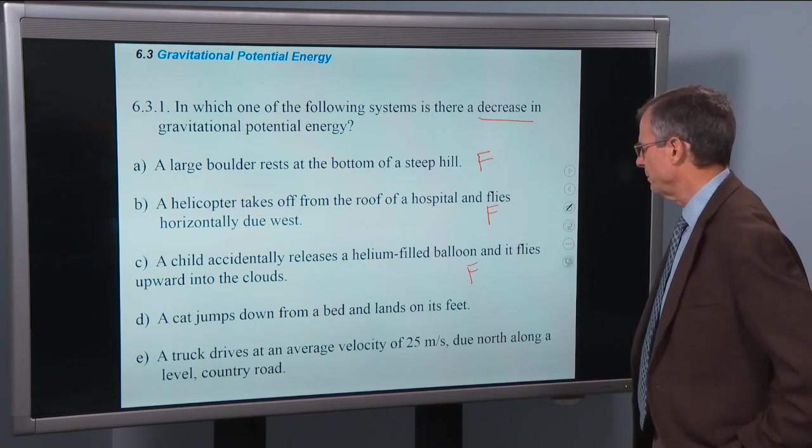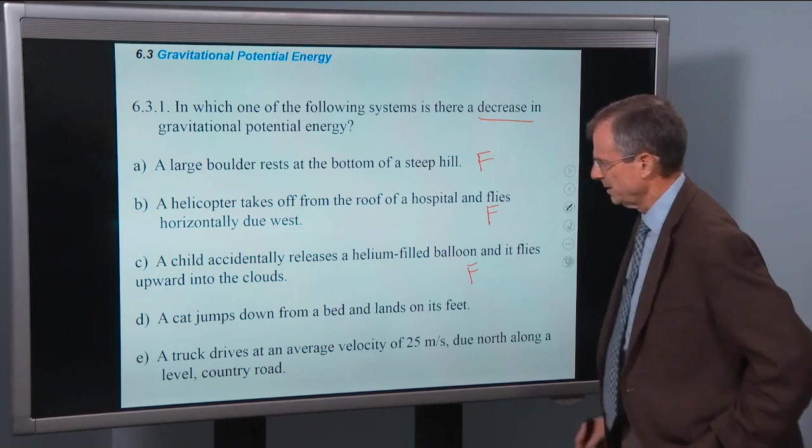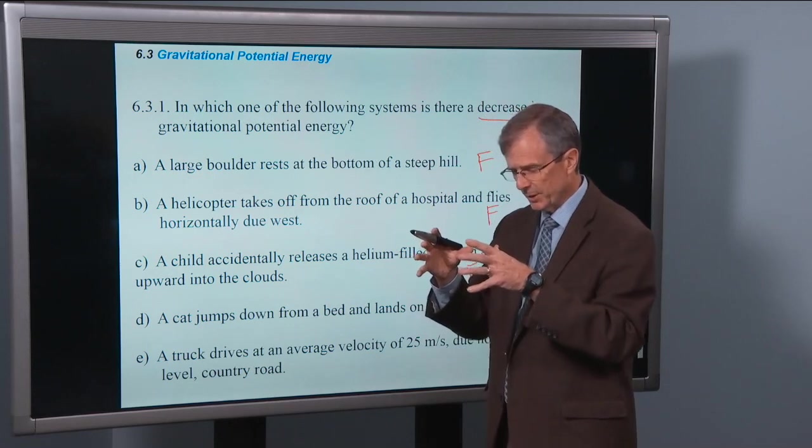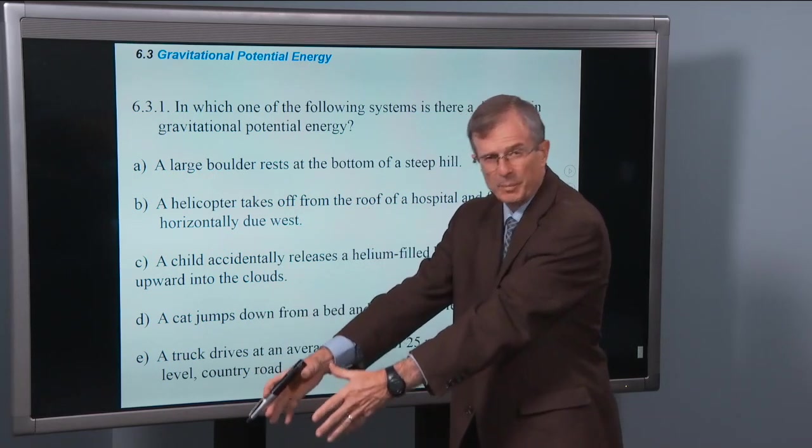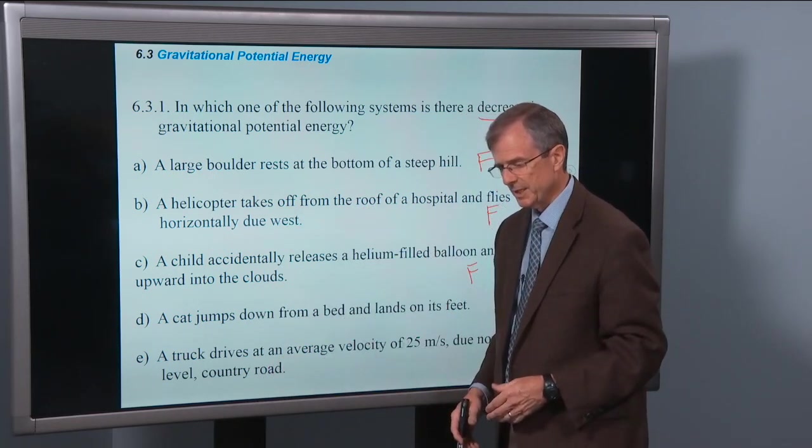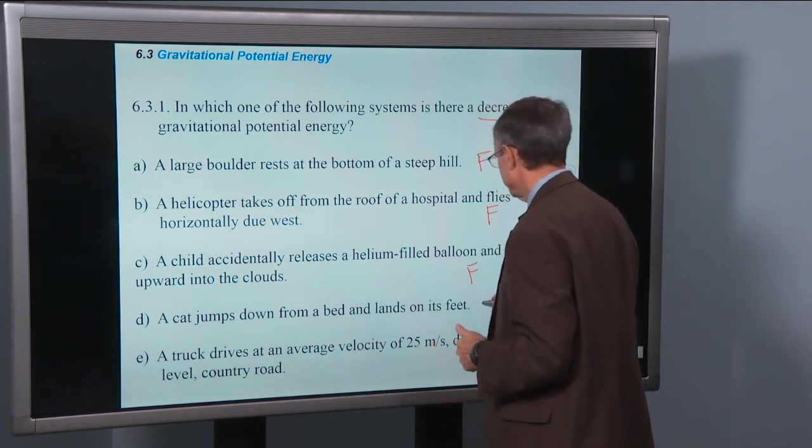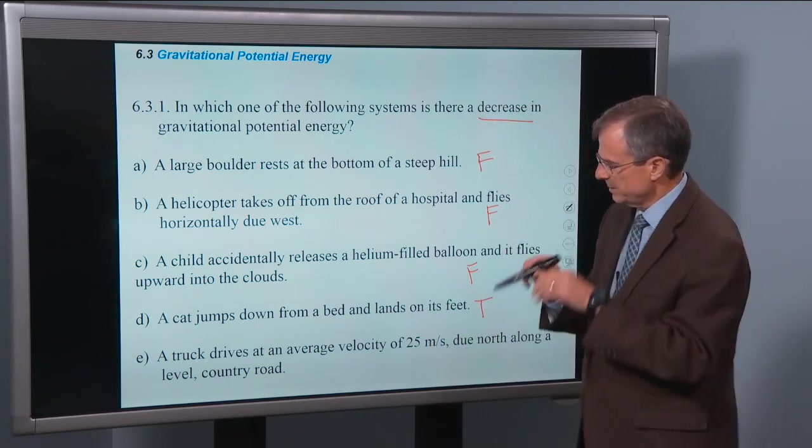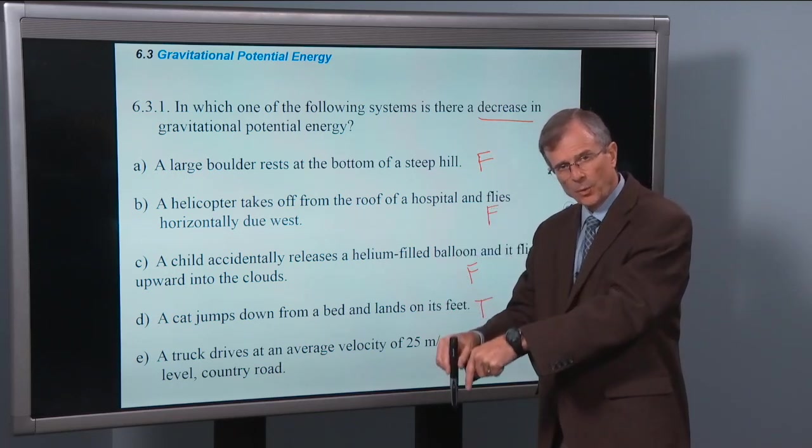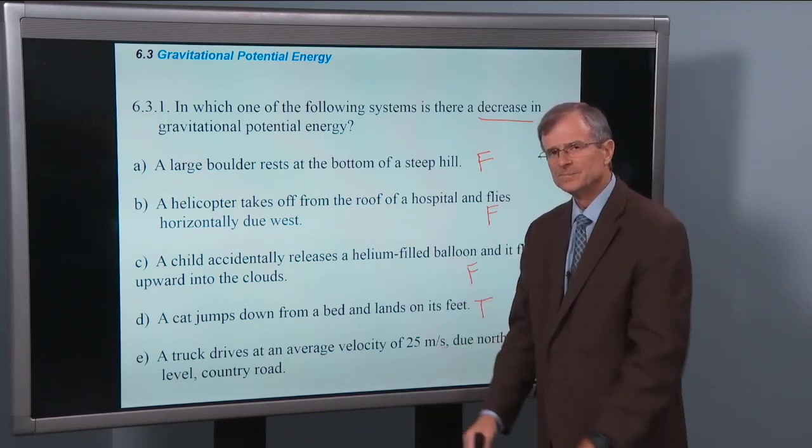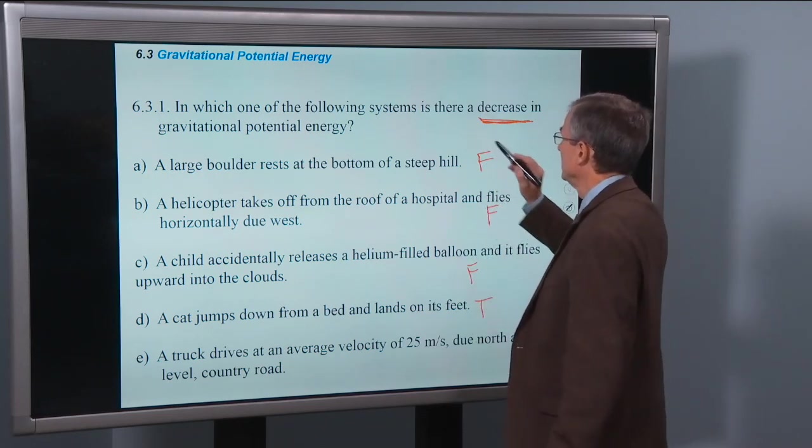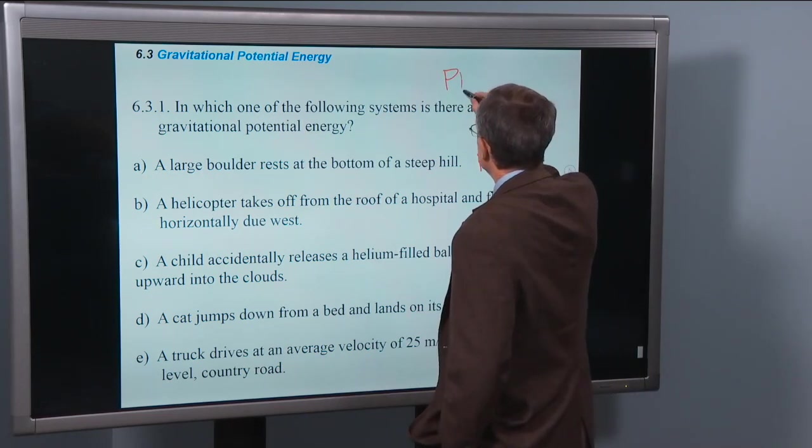A cat jumps down from a bed and lands on its feet. The cat starts here, jumps off the bed. It might not be going down vertically exactly. It might do a parabolic trajectory, lands on its feet. This is the one that we want. Why? Because the height is lowering, you're going down. And that will signal a decrease in the gravitational potential energy.